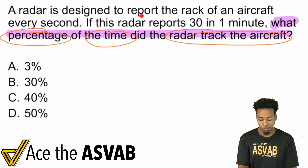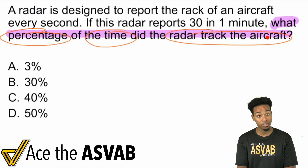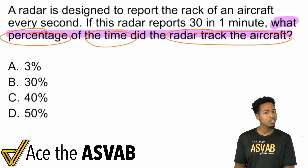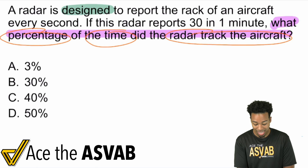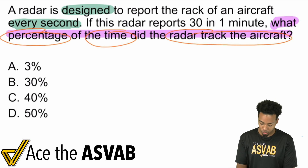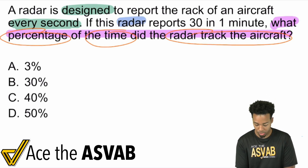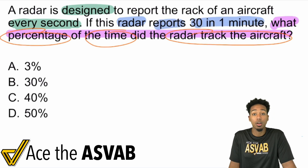A radar is designed to report the track of an aircraft every second. If this radar reports 30 times in one minute, what percentage of the time did the radar track the aircraft? A couple details to notice: the radar is designed to report every second, while this one reports 30 times in one minute. So what percent of the time are we talking about?